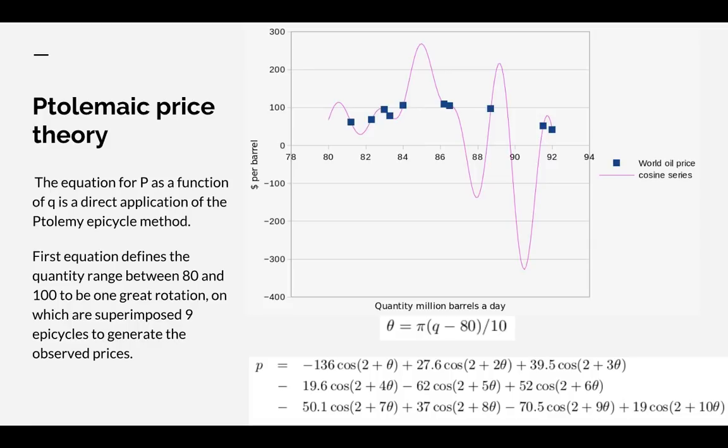Now that looks familiar because that is exactly the form of equation that I've used to fit the oil price data. The equation for p as a function of q is a direct application of the Ptolemaic epicycle method. The first equation defines a quantity in the range between 80 and 100 to be one great rotation of the Ptolemaic circle applied to oil prices, on which I have superimposed nine epicycles, and this then generates the observed prices at exactly the right times.